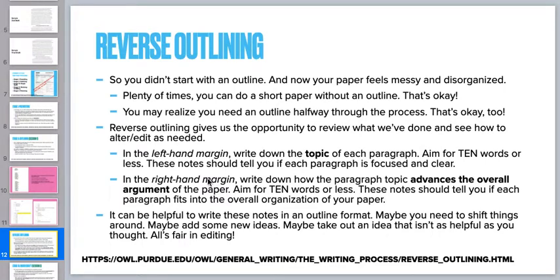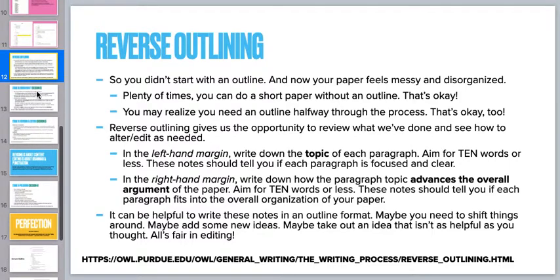I love the steps that Purdue OWL suggests. They talk about going to the left-hand margin and writing down the topic of that paragraph — I like to encourage it to be ten words or less, like a fortune cookie, because it forces us to really focus on exactly what that paragraph is about. Then on the right-hand side, ask: does this advance my main topic? That's where we compare each paragraph to our thesis. We want to be super concise — we're writing notes to ourselves, not good sentences. Having these tools in your toolbox is really important.